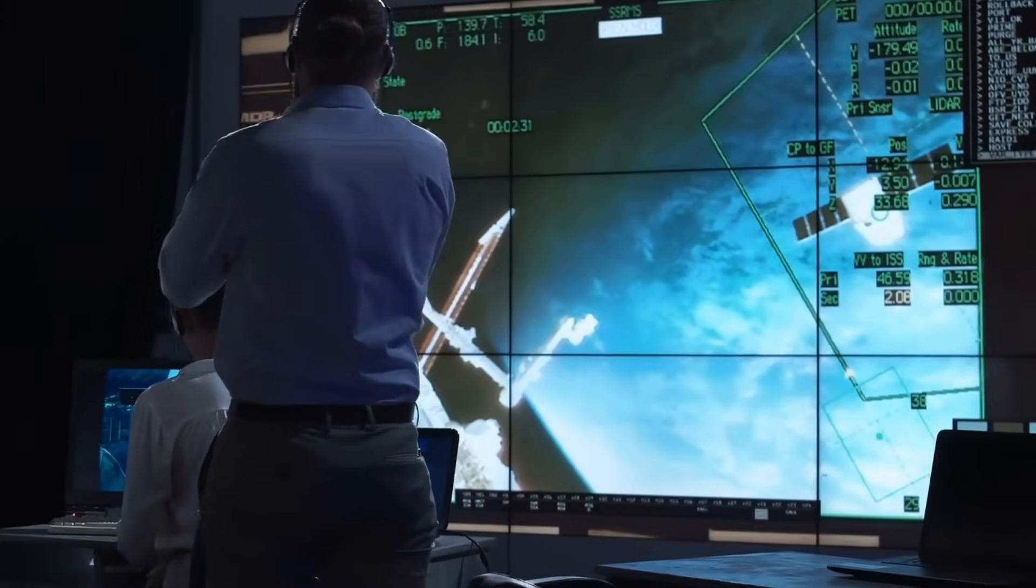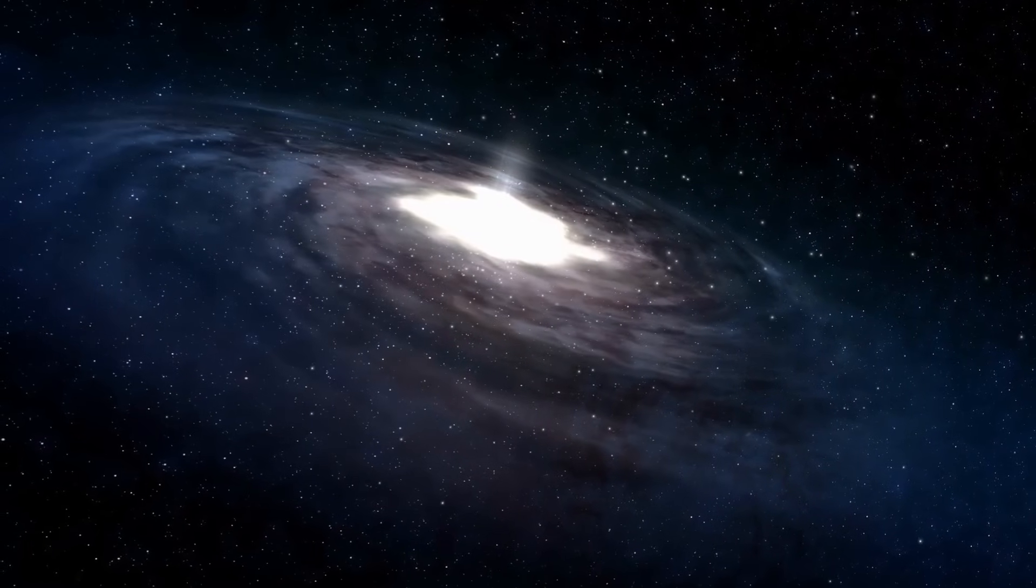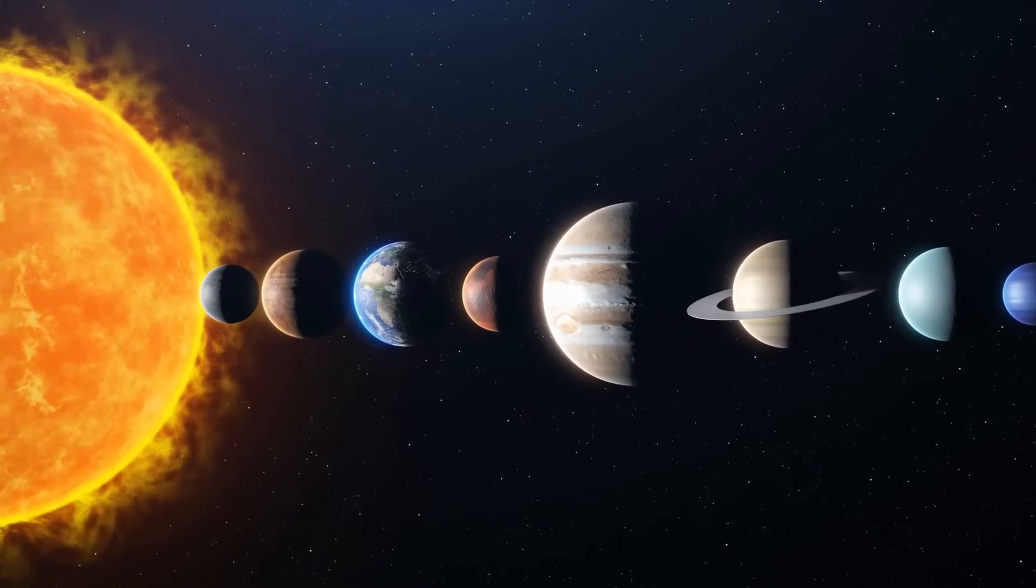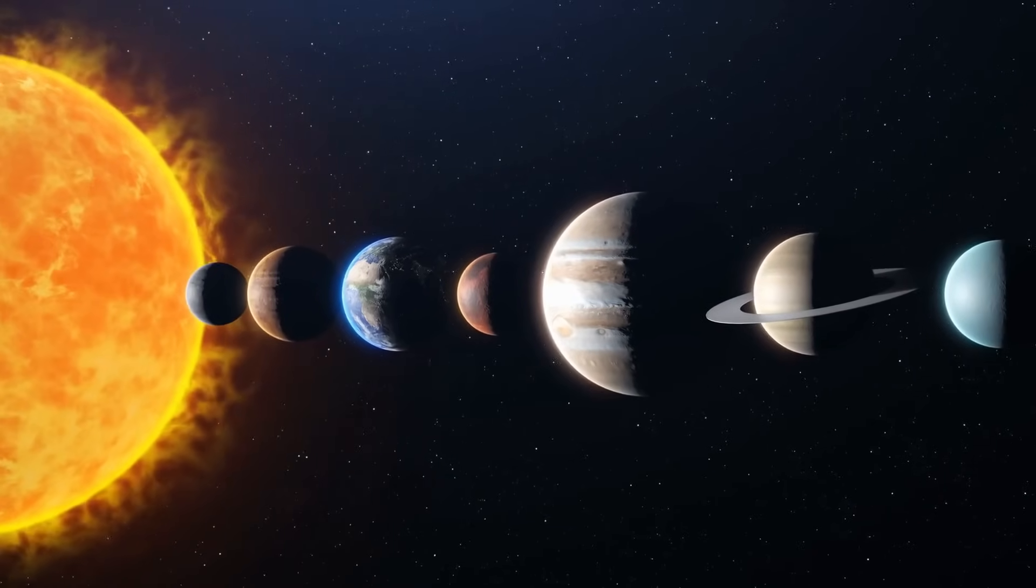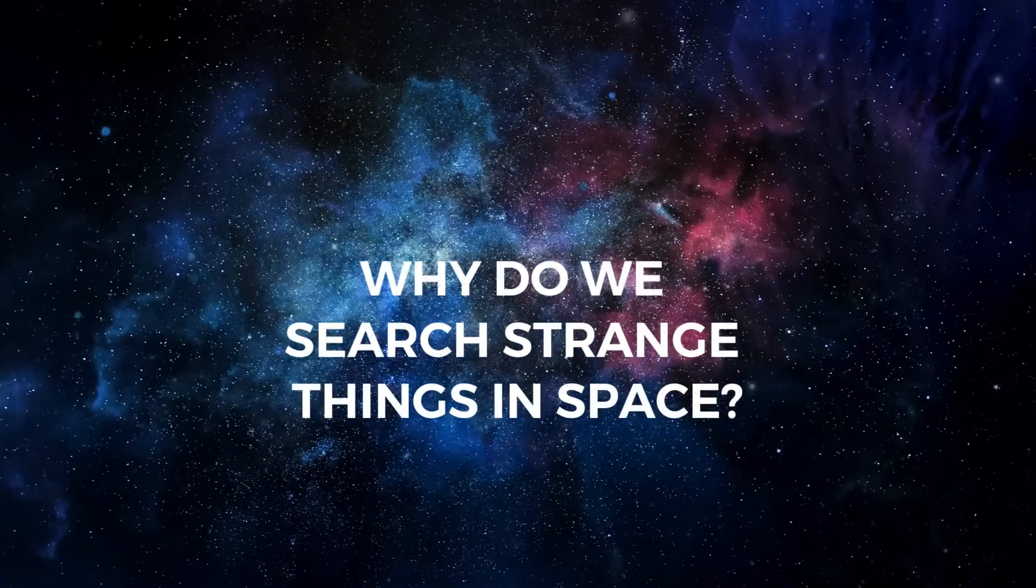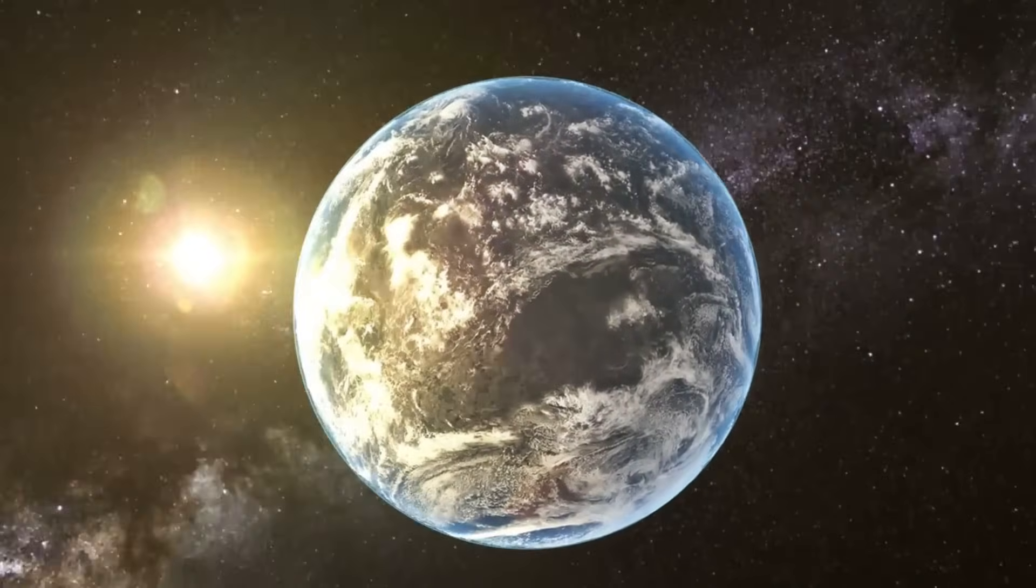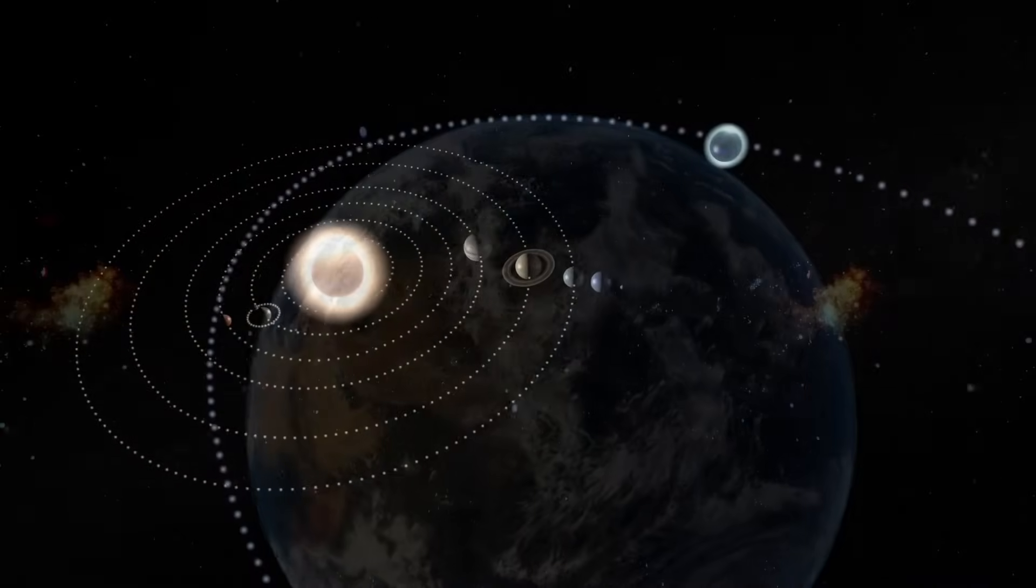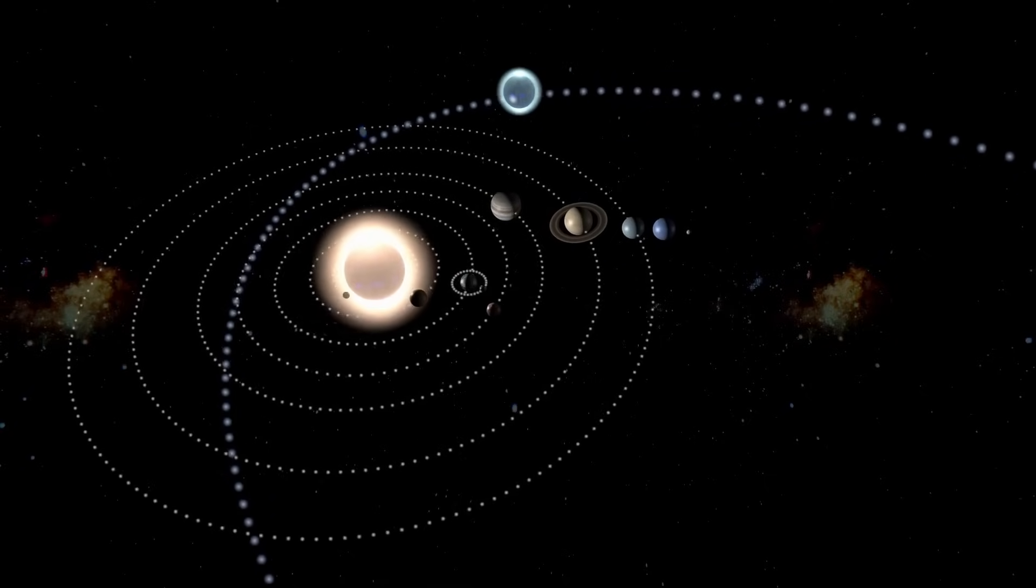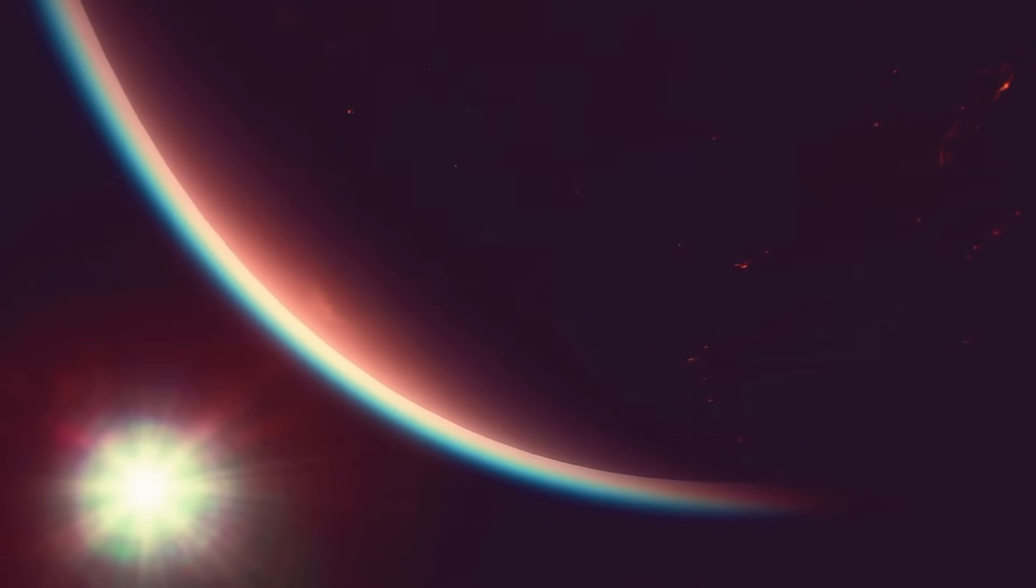Topological defects may sound like something you'd complain about in a brand new suit, but in the universe, they are places where conditions in the early universe led matter to be spread out unevenly. These flaws are like the threads that hold the world together. They are places where the fabric of space-time has become tangled in a strange way. You might ask, why do we look for these strange things in space? The answer lies in the very basis of what we know about the world. Finding cosmic strings or other geometric flaws would not only support ideas about the early universe and the big bang, but it would also give us a lot of information about the basic forces that shape the universe.